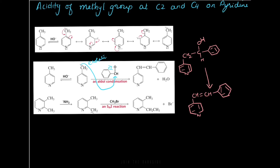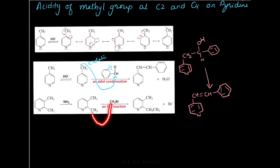You can also alkylate and form carbon-carbon single bonds by taking advantage of the acidic methyl group. Here we have a methyl group in the second position. Note that a methyl group not at C2 or C4 will not be acidic, since the nitrogen withdraws electrons only from the second and fourth positions. The base grabs the hydrogen forming a carbanion, and this carbanion attacks the alkyl halide, thrusting electrons onto bromine and forming a new carbon-carbon single bond. This is another way to form carbon-carbon bonds on pyridine.